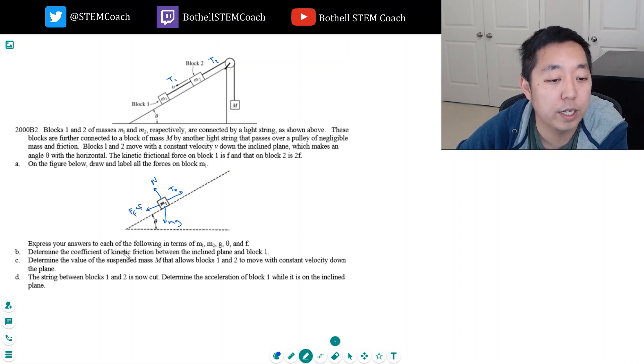Now express your answers to each of the following in terms of M1, M2, G, theta, and F. Determine the coefficient of kinetic friction between the inclined plane and block 1. They move at constant velocity, so there's no acceleration. Constant velocity means acceleration is zero. That's a key part of this equation.